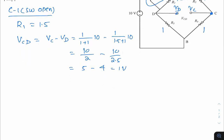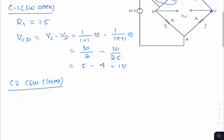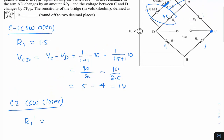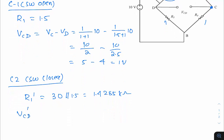Case 2 — switch closed: when the switch is closed, R1 comes in parallel with 30 (kΩ combined). R1 = 1.5 kΩ in parallel with 30 kΩ: (30 × 1.5) / (30 + 1.5) = 1.4285 kΩ. So R1_dash = 1.4285 kΩ.